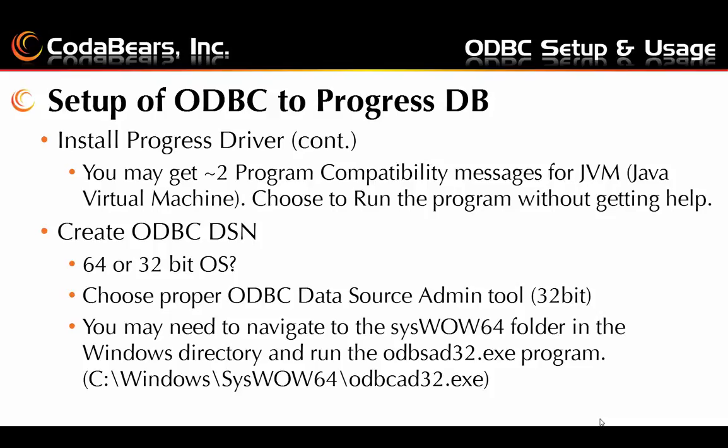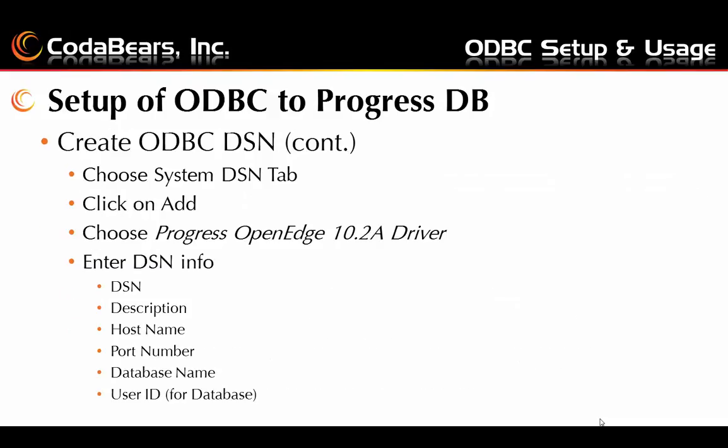After you have your driver set up, you need to create your data source via DSN. That will depend on whether you have a 32 or 64-bit operating system. Most versions of OpenEdge Progress with Epicor only have a 32-bit driver, so if you have a 64-bit machine you'll have to go to a special administration tool for ODBC setup, which is somewhat hidden in Windows — it's in the Windows SysWow64 folder. The example I'm going to demonstrate is on a 64-bit machine, so we will illustrate how that occurs.